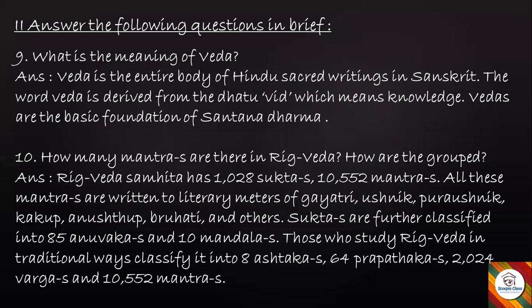Question: How many mantras are there in Rig Veda and how are they grouped? Answer: The Veda Samhita has 1028 Suktas and 10,552 mantras. These mantras are classified into 8 Ashtakas, 64 Prapatakas, 2024 Vargas, and 10,552 mantras.